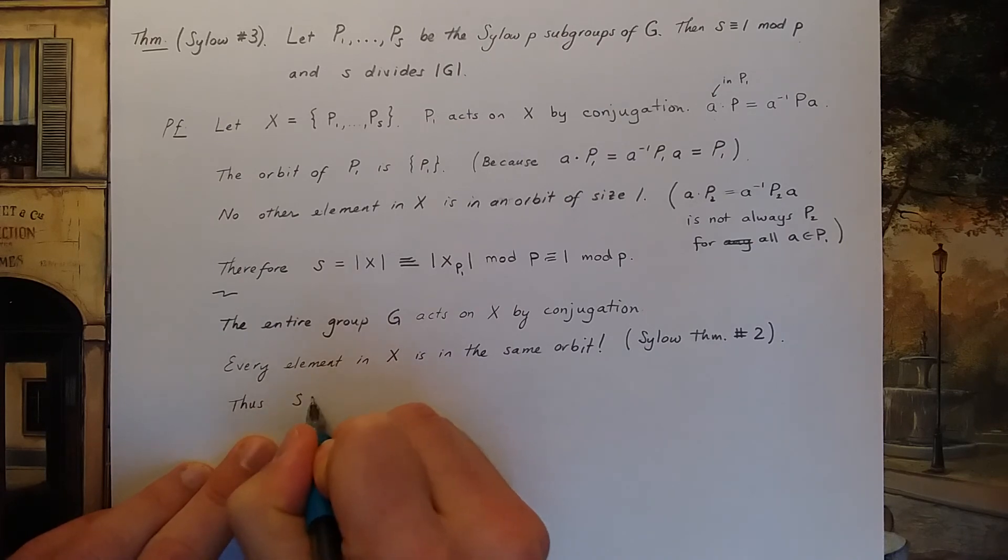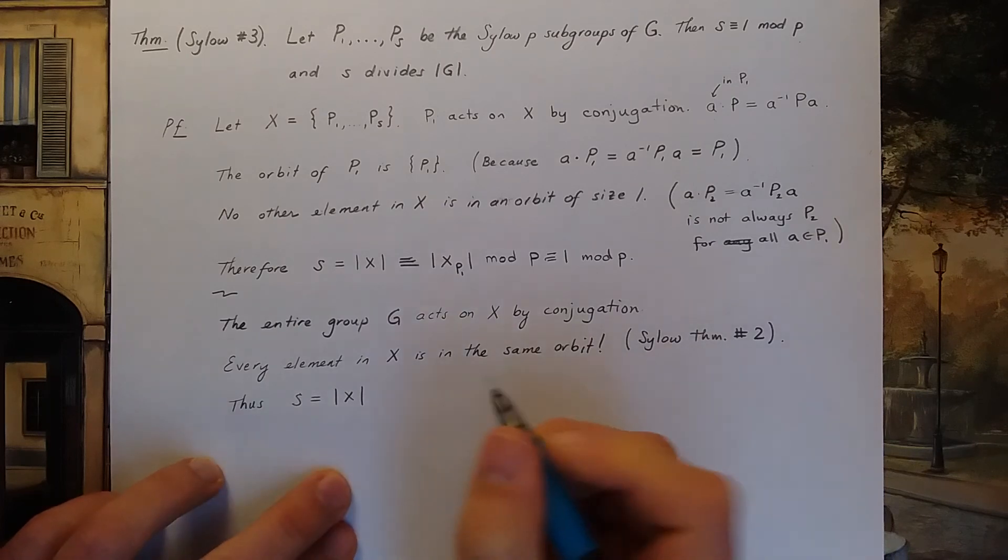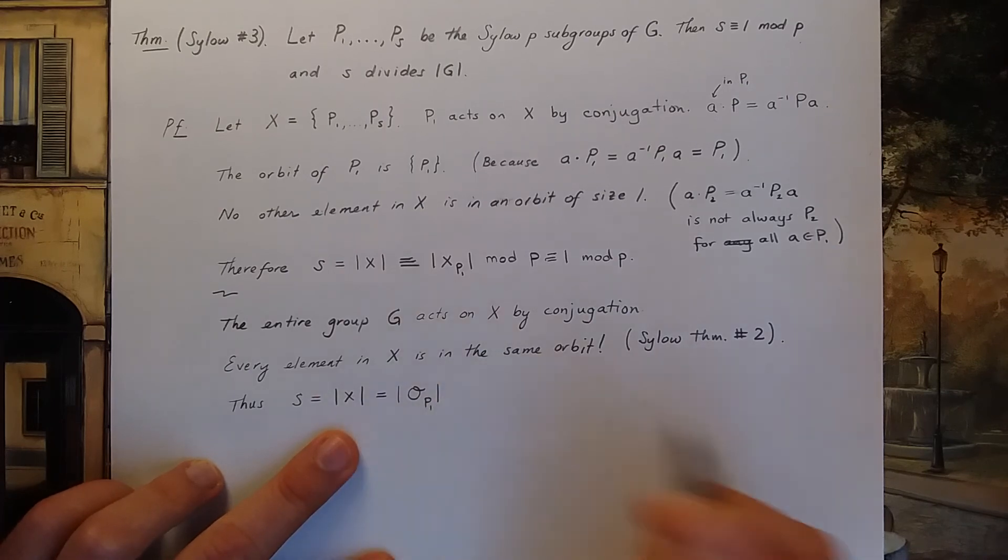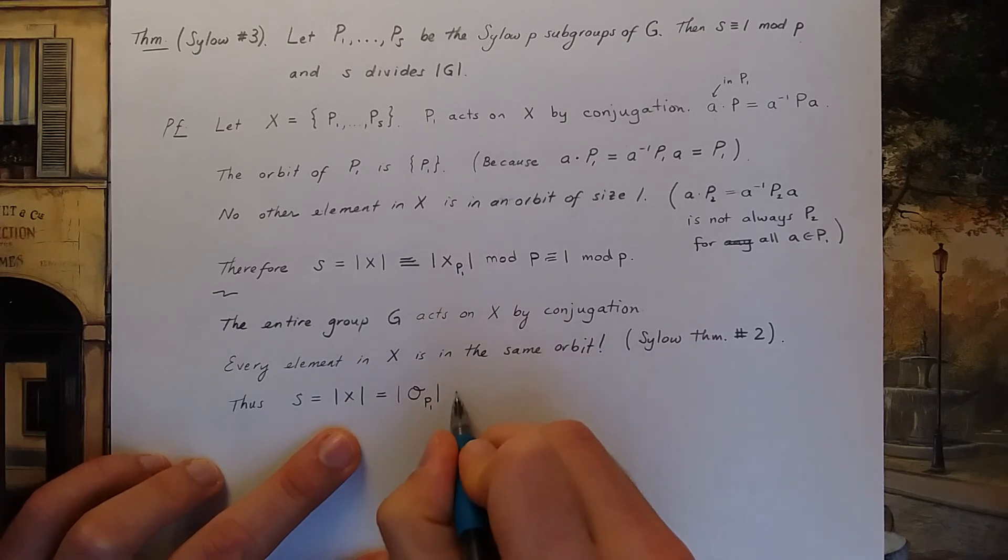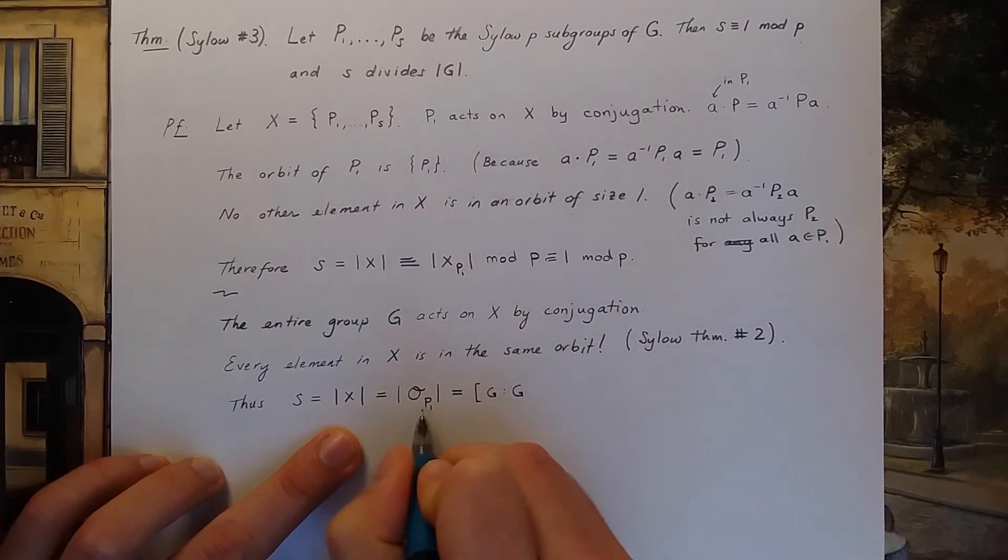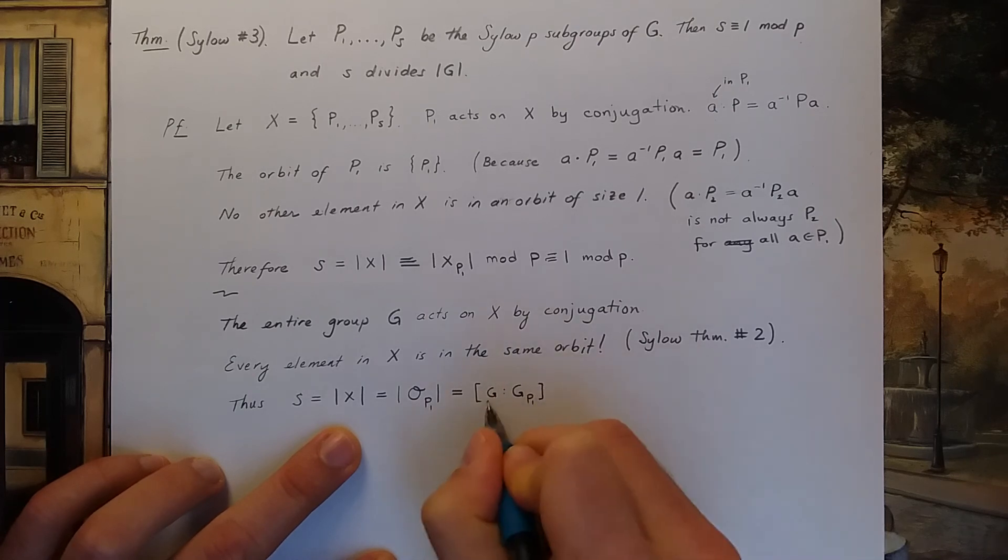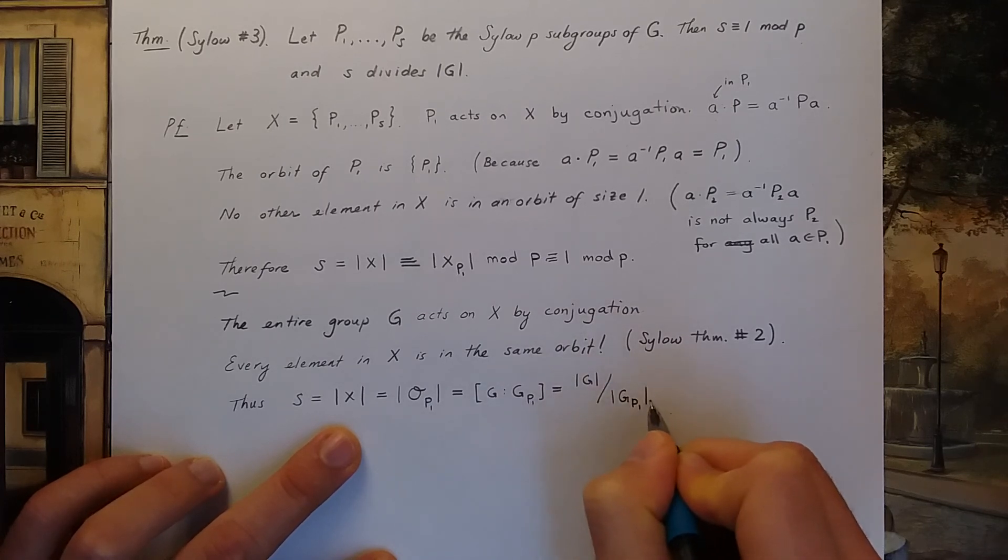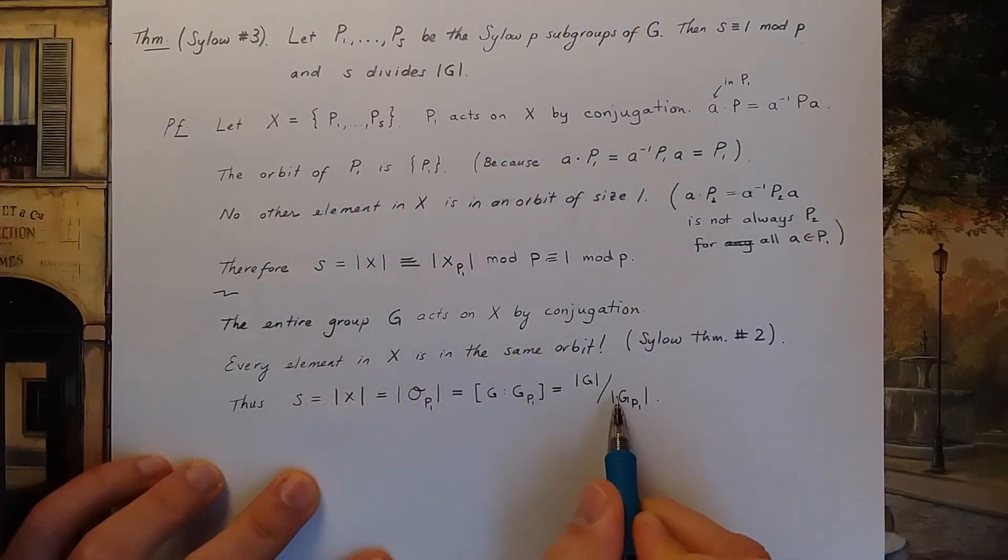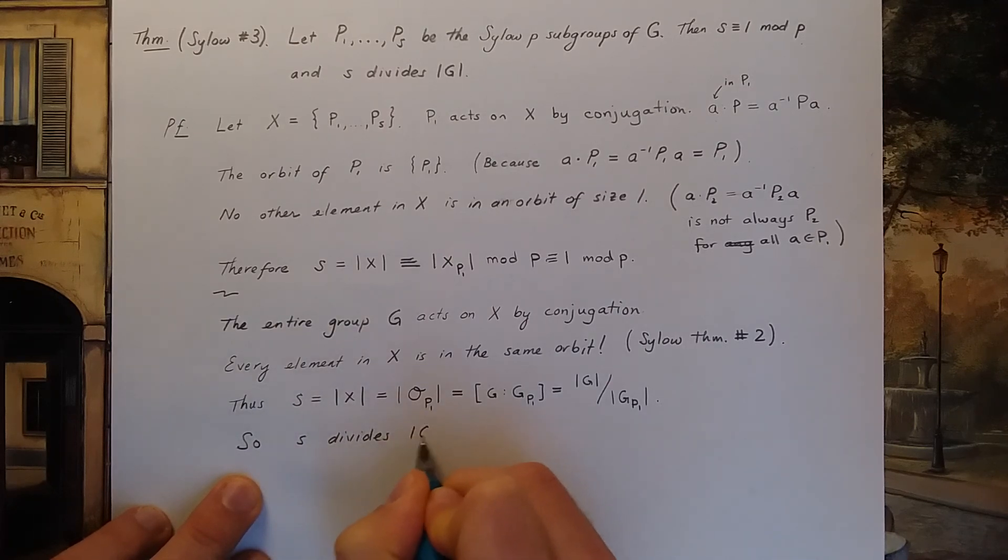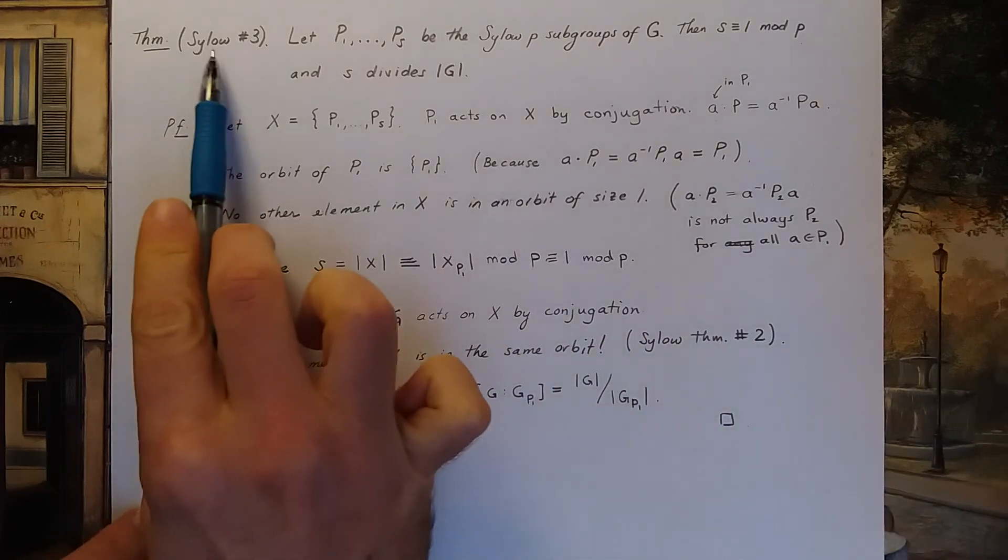Thus, S—that's the size of X—is the same as the orbit of P₁. Using, once again, the orbit-stabilizer theorem, this is the number of left cosets of the stabilizer subgroup G_{P₁} in G. That's the size of the group |G| divided by the size of the stabilizer subgroup. So in other words, that's equivalent to saying that S has to divide the size of the group. That's the end of the proof of our third and final CELO theorem.